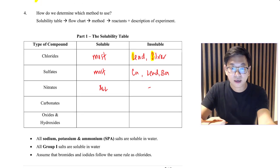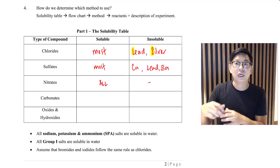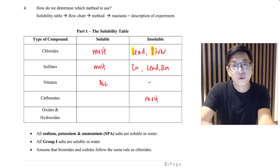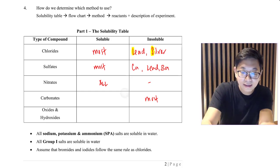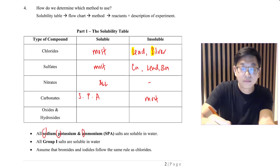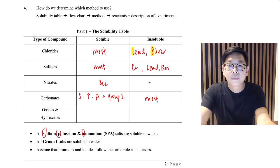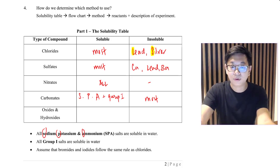For carbonates, most are insoluble. A few are soluble, forming the word SPA: S for sodium, P for potassium, and A for ammonium, as well as any other group 1 carbonate — things like lithium, rubidium, caesium. So these carbonates are soluble.